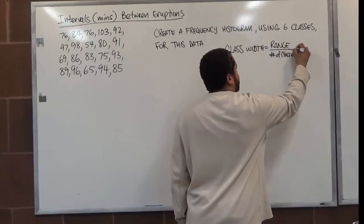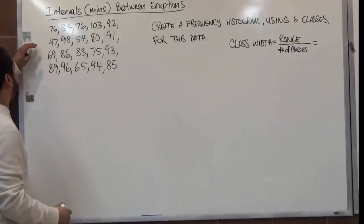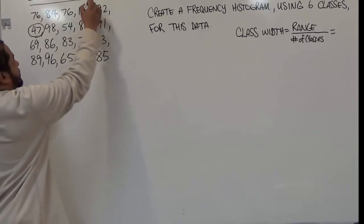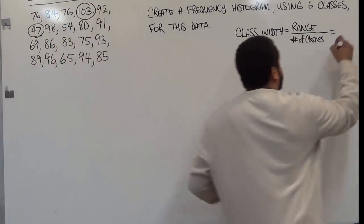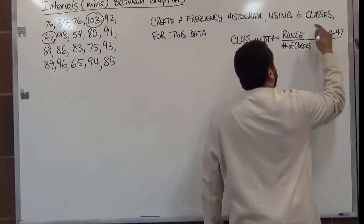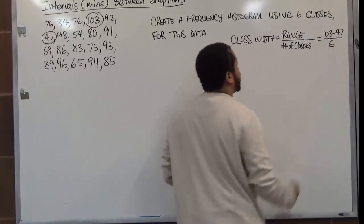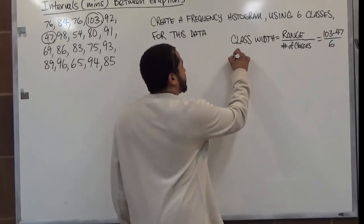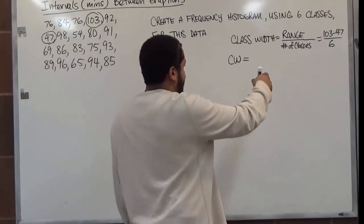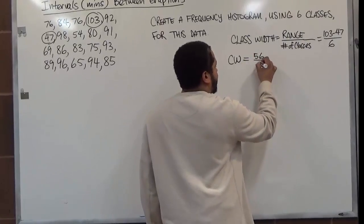The class width is calculated by taking the range and dividing it by the number of desired classes. We want six classes, so we take our range — which is the high minus the low. Looking at our data, the low is forty-seven and the high is a hundred and three. So we subtract these two to get the range, then divide by six.